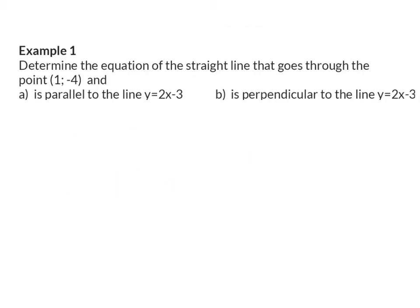Example 1. Determine the equation of the straight line that goes through the point (1, -4), and in A, is parallel to the line y is equal to 2x minus 3. To give the equation of a straight line, we need to determine a value for m and c. In A, we are given that the line we want to calculate is parallel to the line with a gradient of 2, and for parallel lines, we know that the gradients are the same. So we have an equation of y is equal to 2x plus c, and now we just need to calculate the value of c.